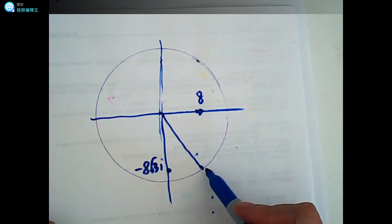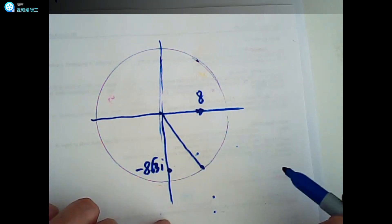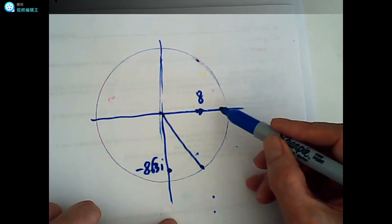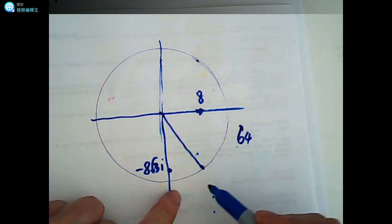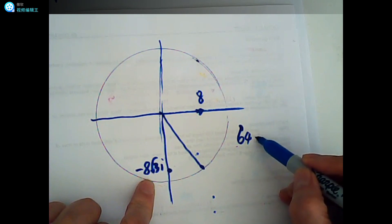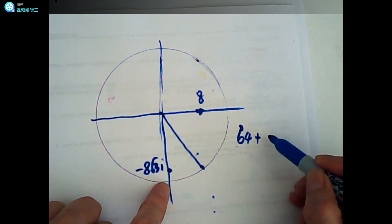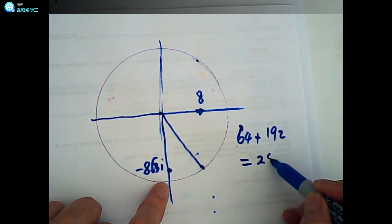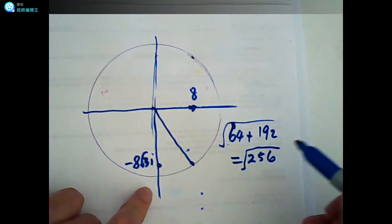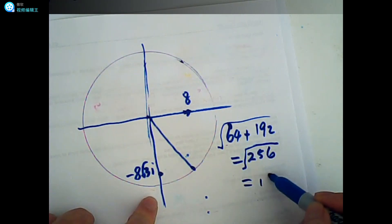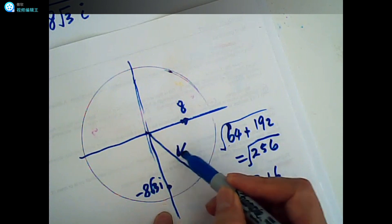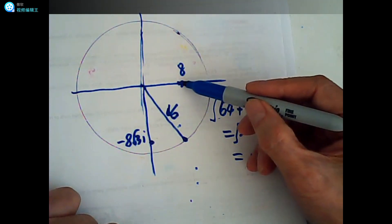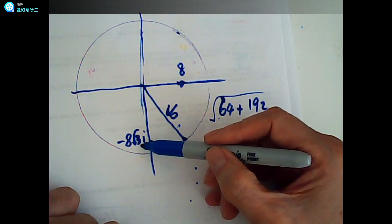To find the fourth root, we compute the modulus. That is equal to 8 squared plus this — 4 times 3 is 192, so this equals 256. Taking the square root, the modulus is equal to 16.